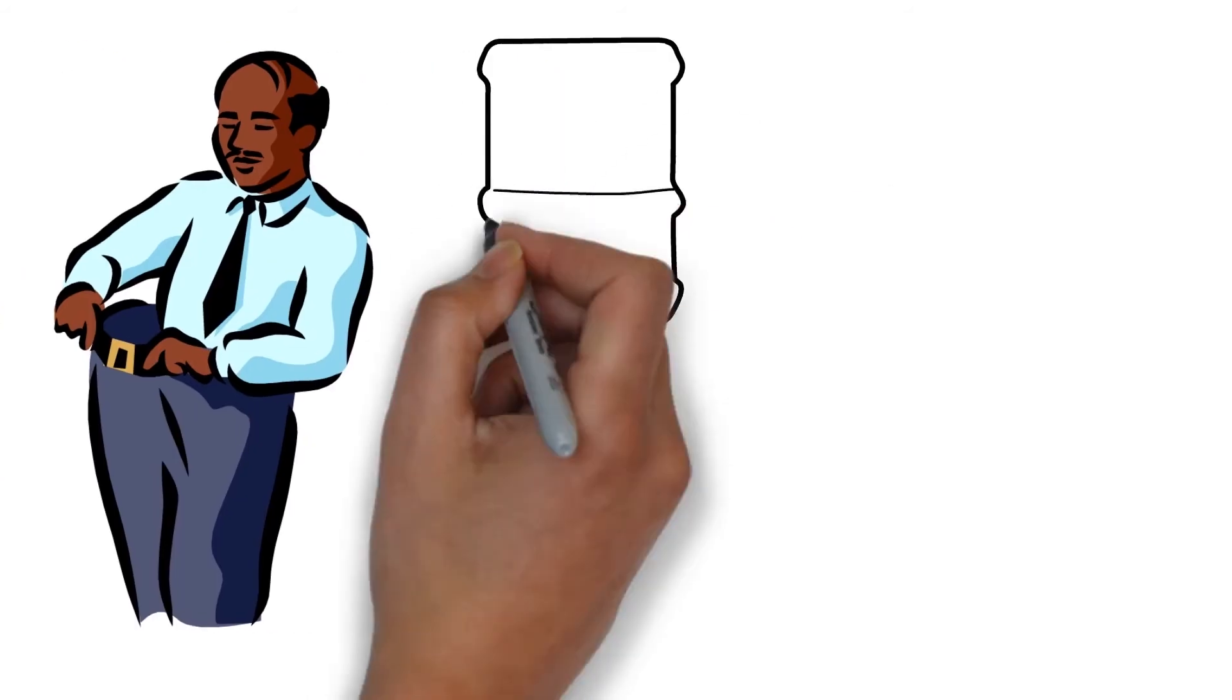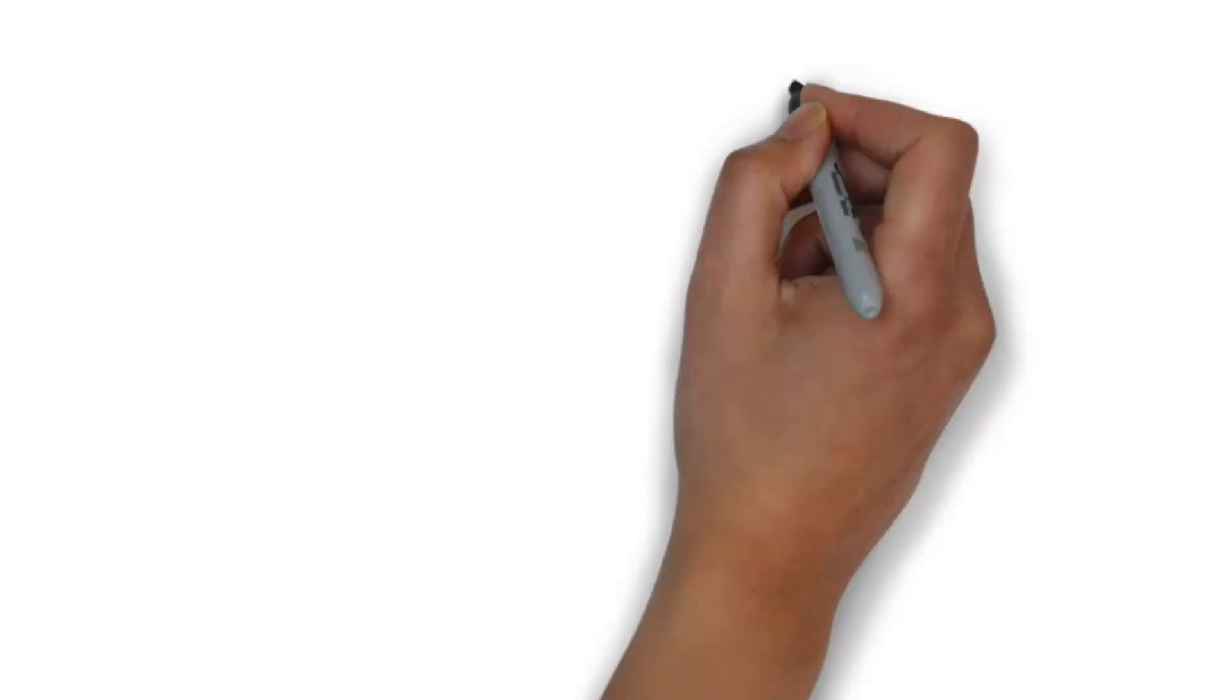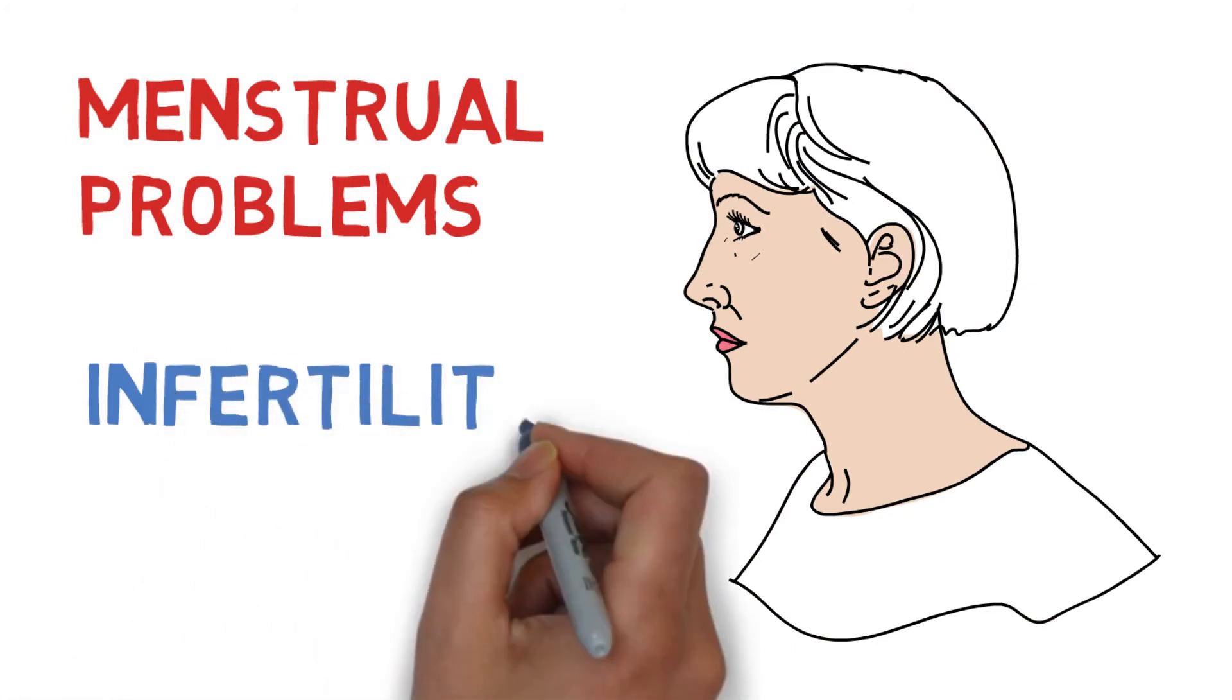There is also polydipsia, or excessive thirst, which is accompanied by polyuria, or excessive urination. Women with hyperthyroidism often have disturbed menstrual cycles and infertility issues.